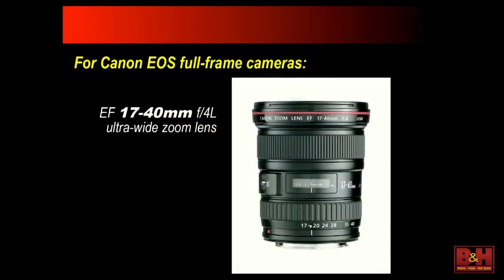For those of you with full frame cameras — 5D series cameras, something like that — in terms of ultra-wide zooms, the most affordable point of entry is the 17 to 40 f/4, which I have a sample of up here. We also have two higher-end L series lenses: the 16 to 35 f/2.8 with a wide maximum aperture, and the relatively new 16 to 35 f/4, which is probably the sharpest of the bunch.